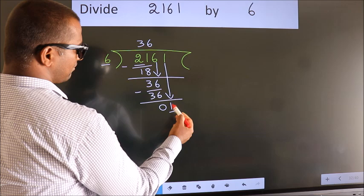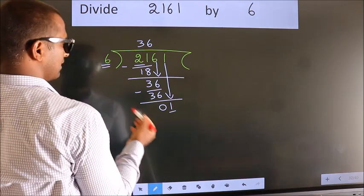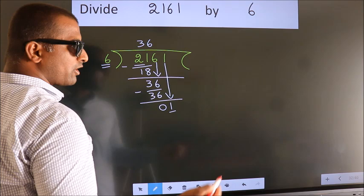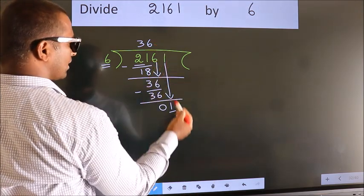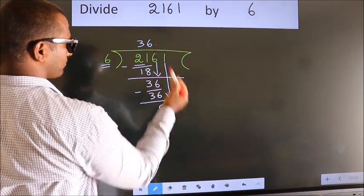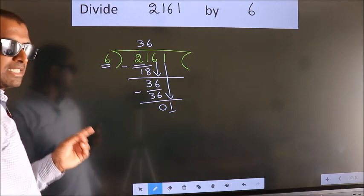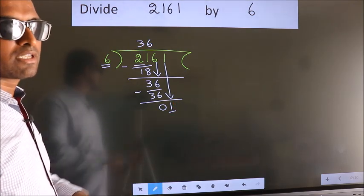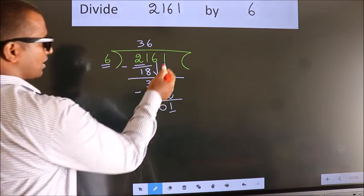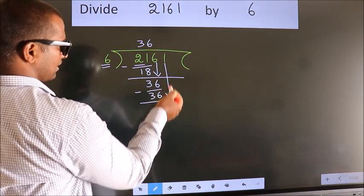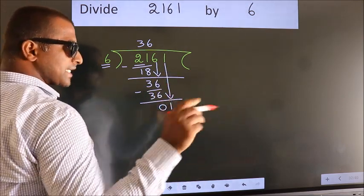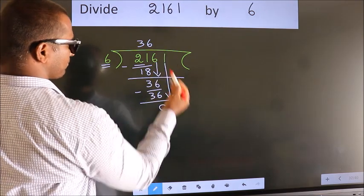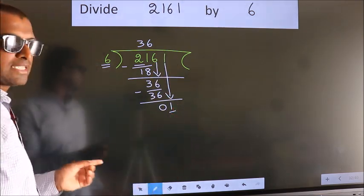Here we have 1, here 6. 1 is smaller than 6. So what many do is they directly put dot, take 0, which is wrong. Why is it wrong? Because just now you brought this number down.